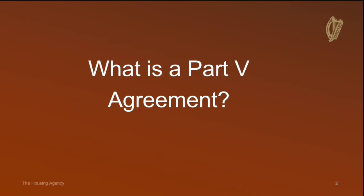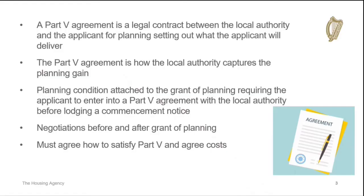What is a Part 5 Agreement? A Part 5 Agreement is a legal contract between the local authority and the applicant for planning permission. It sets out what the applicant will deliver and can cover any of the options outlined in the previous video titled 'What is Part 5?' The Part 5 Agreement is how the local authority captures 20% of the planning gain.